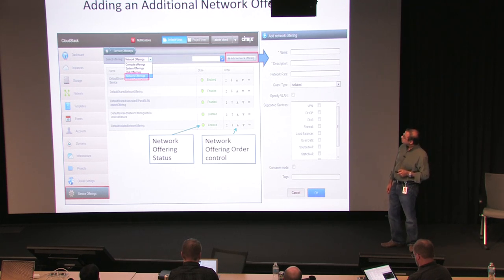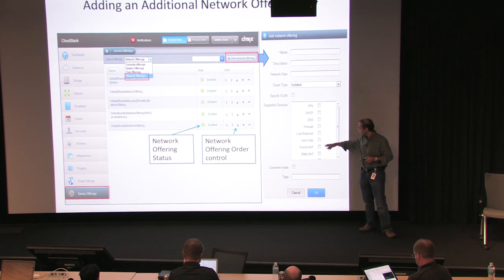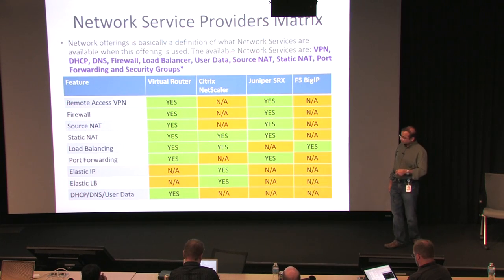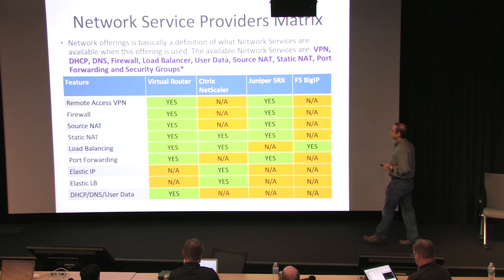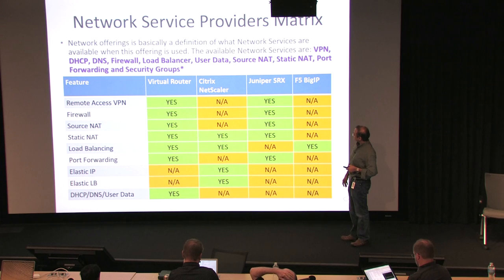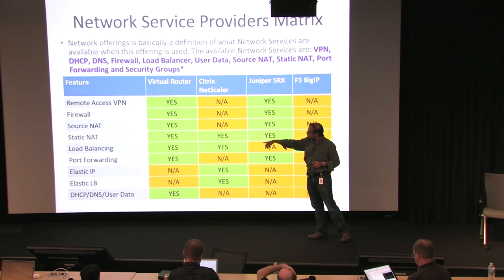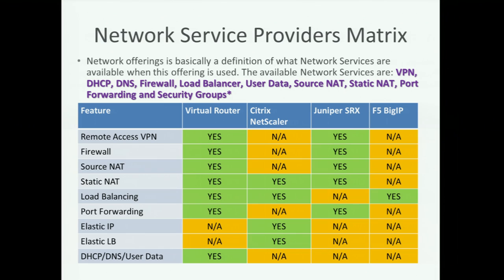This is the admin UI showing how to add an additional network offering. You specify the services offered by that network offering. There's a nice matrix showing what's supported by what: for load balancing, F5 Big-IP, NetScaler, or the virtual router would support that. If you wanted user data, only the virtual router supports that. These slides will be put up so you can look it up.